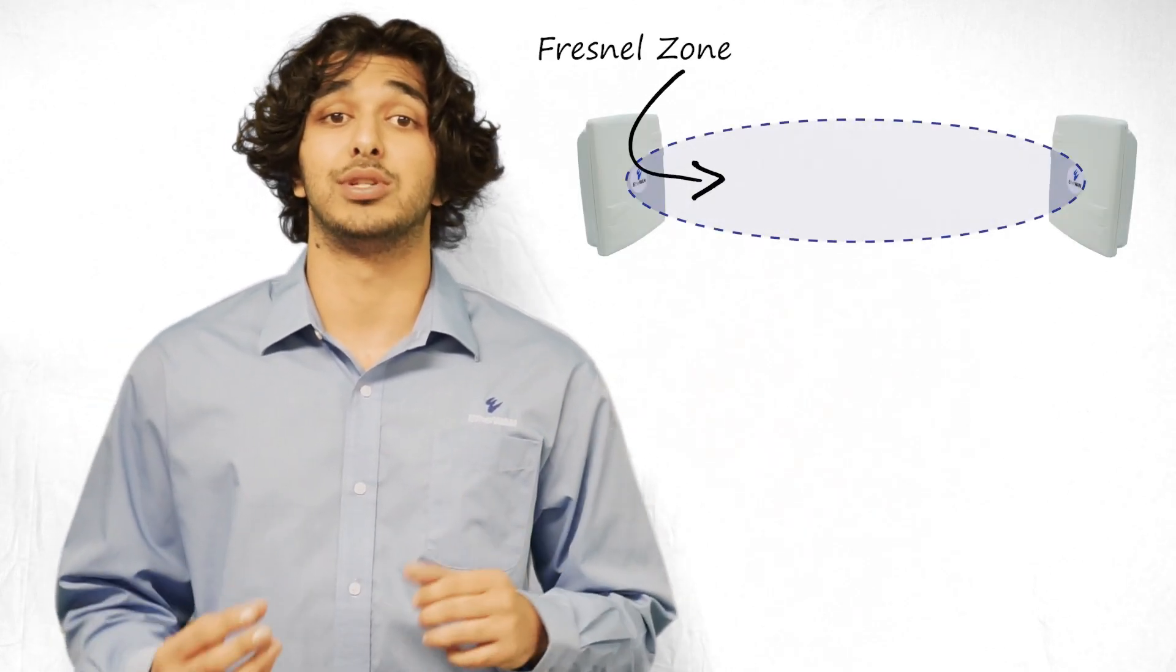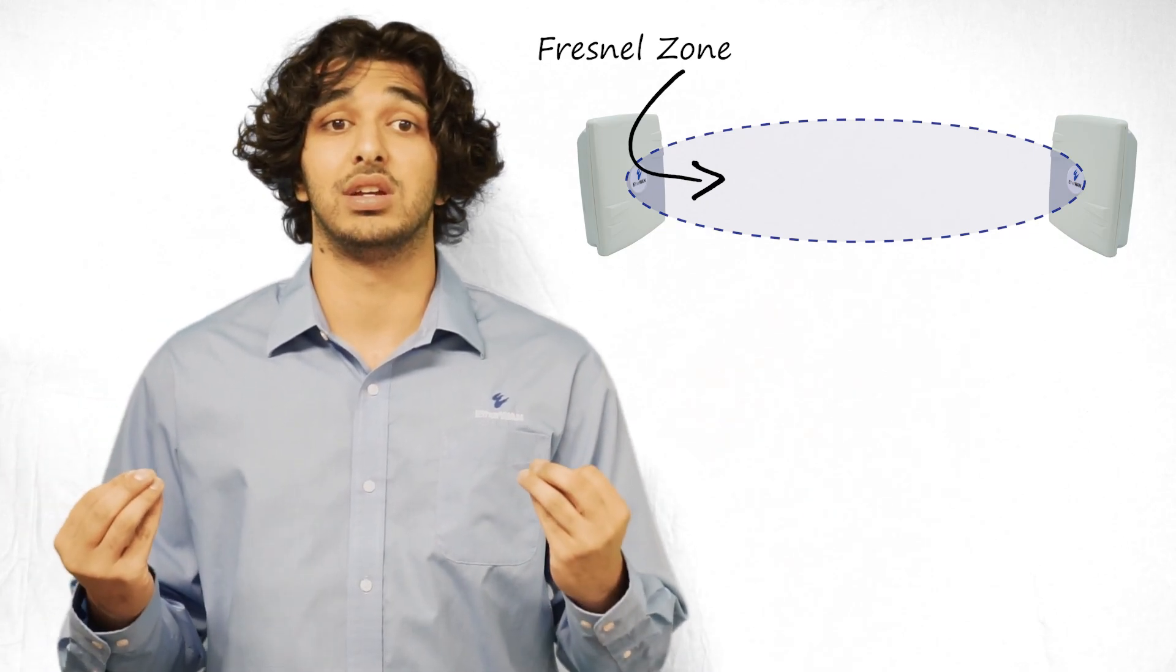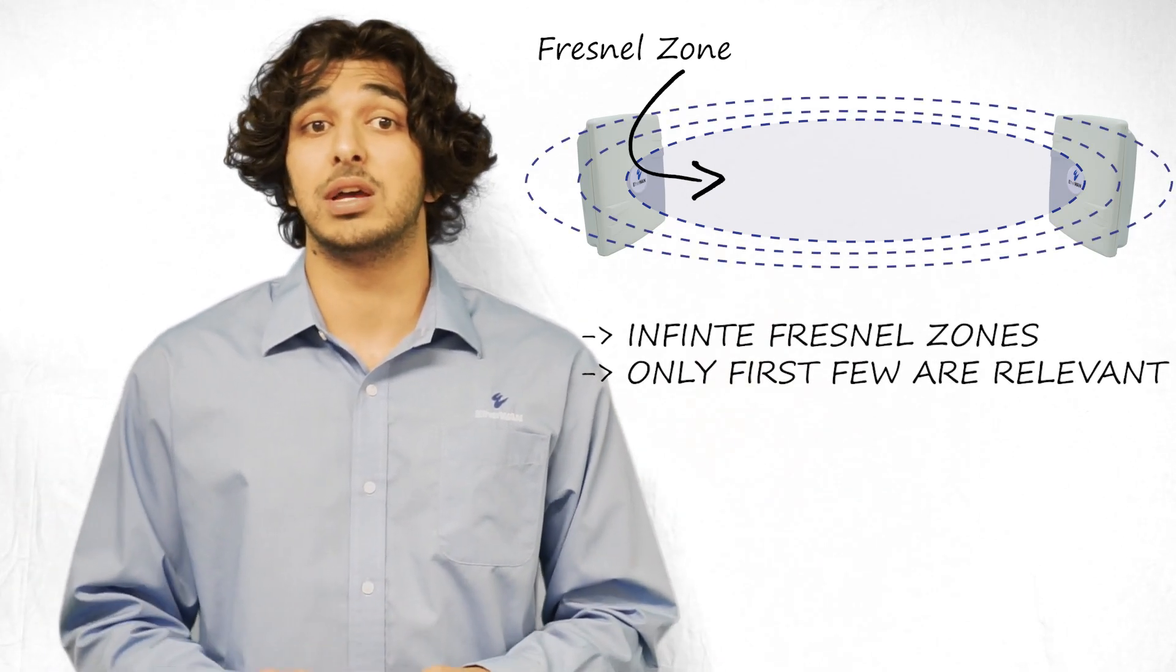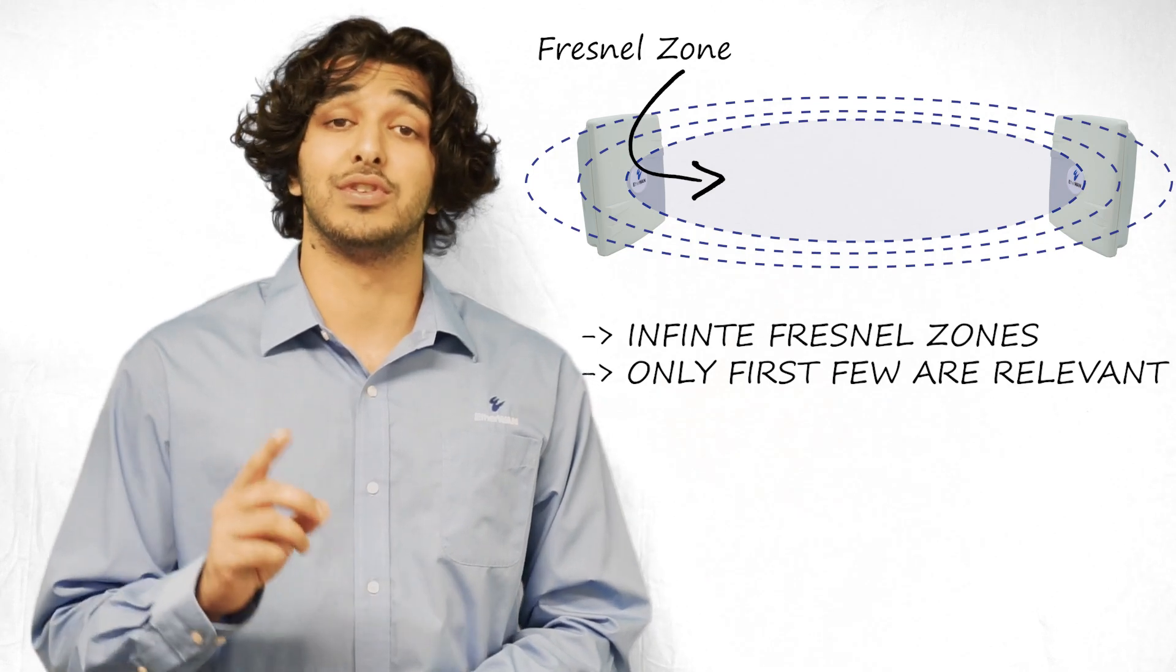When dealing with a wireless bridge like the EZ-Link, you need to make sure you know the Fresnel Zone radius to make sure you have a good connection. A Fresnel Zone is a pill-shaped box between a transmitting and receiving antenna. The number of Fresnel Zones is infinite, but for practical use, we only care about the first few zones.